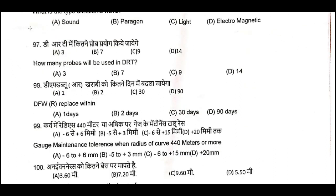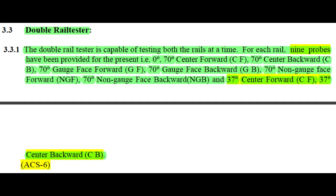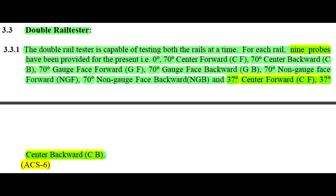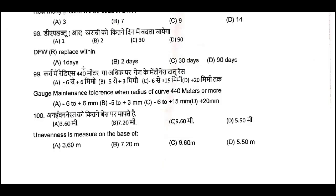Question Number 97: How many probes will be used in DRT? SRT has 7 probes. DRT means double — 2 into 7, that is 14 probes. Q97, D is the correct answer: 14 probes. However, through correction slip number 6, number of probes in SRT is 9 and DRT is 18.